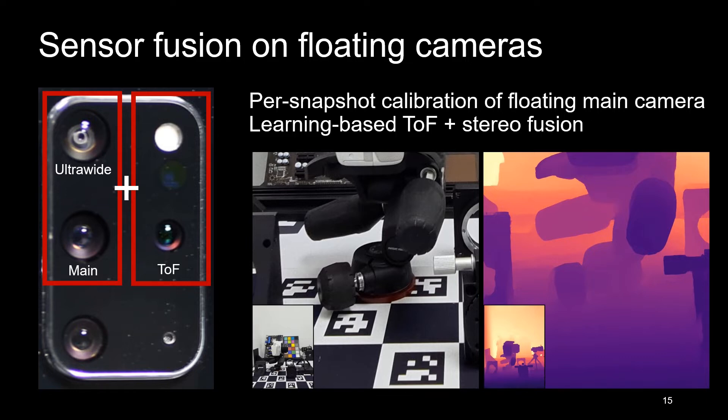Let's see how the method works. We begin with uncalibrated main camera RGB and ultrawide RGB and raw ToF measurements. The ultrawide and ToF modules are rigid, so we calibrate these offline.